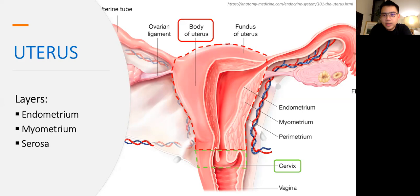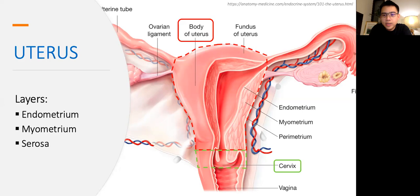The uterus has several layers. The innermost layer is the endometrium, which is responsible for thickening and shedding during the menstrual cycle. The main wall of the uterus is known as the myometrium and is made of muscle, which helps the uterus achieve its function of contraction during labor. The thin outer coat of the uterus is known as the serosa.